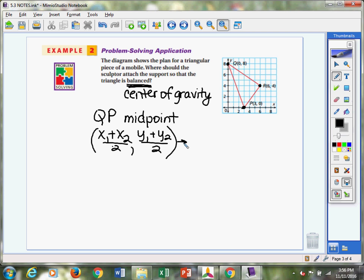So QP, that'd be 0 plus 3, so 3 over 2, which is 1½, and then 8 plus 0 is 8. 8 divided by 2 is 4. So that's going to be the midpoint of QP. So let's find, we're going to estimate where 1½ is, like just kind of find it halfway between 1 and 2, and then go up to 4. Looks like it's about right here.